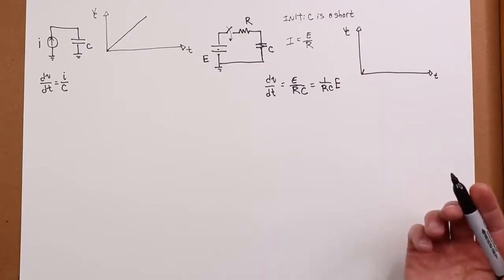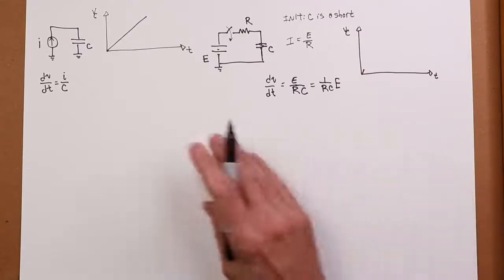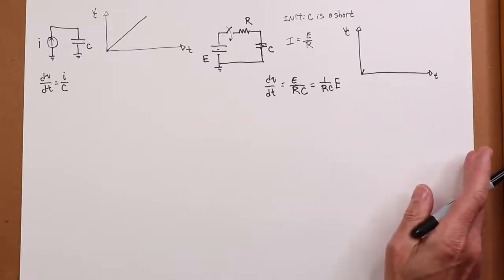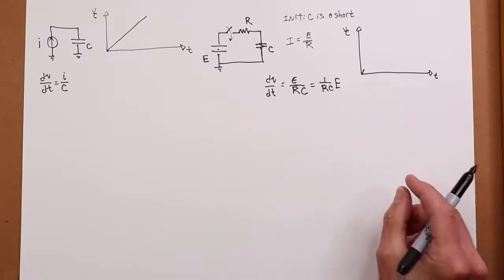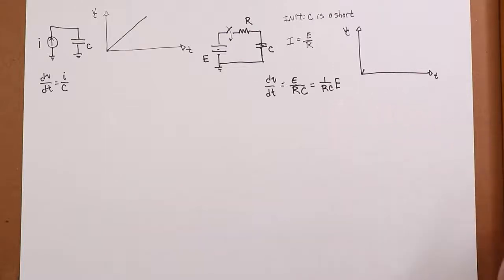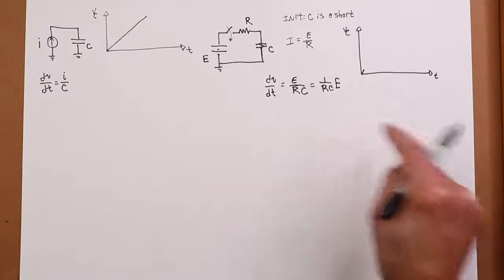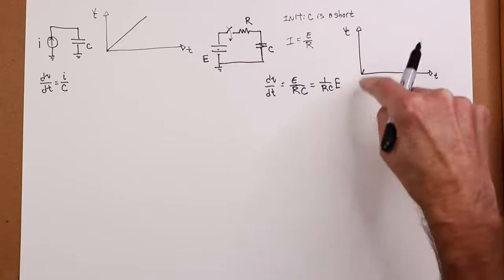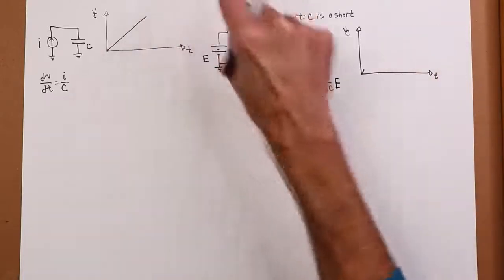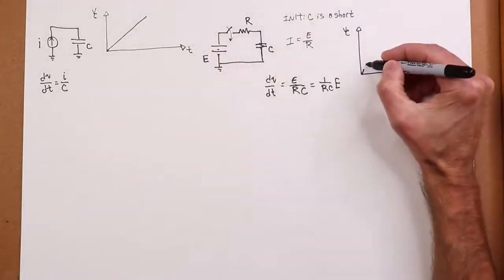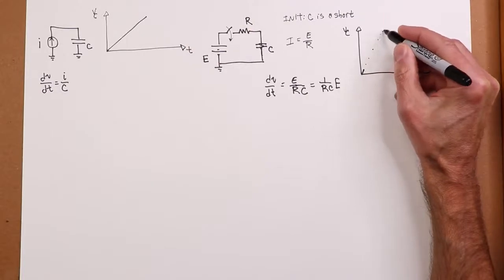Now, I wait a little bit. If this was just a pure current source, if we waited RC worth of time, I'd have RC over RC on this thing, and then we'd be back at E. Straight line. In other words, we have a sort of trajectory like this.